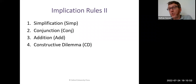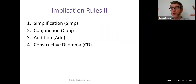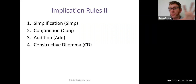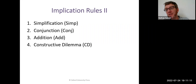In this video, we're going to add four more implication rules to our toolkit. We've got a set of four more moves that we can make in order to prove conclusions from premises, giving us a total of eight implication rules. As with the first set, you need to commit these to memory and know exactly what moves they allow you to make and how to validly apply them.